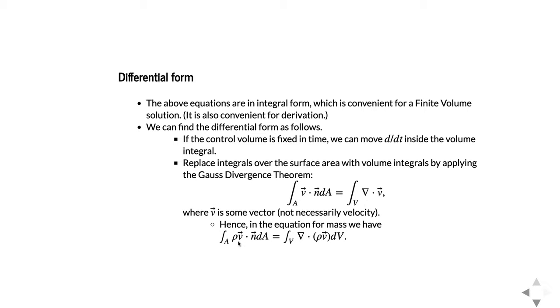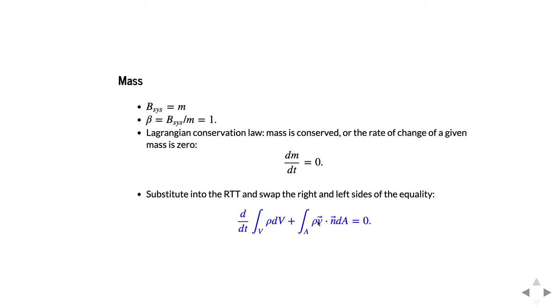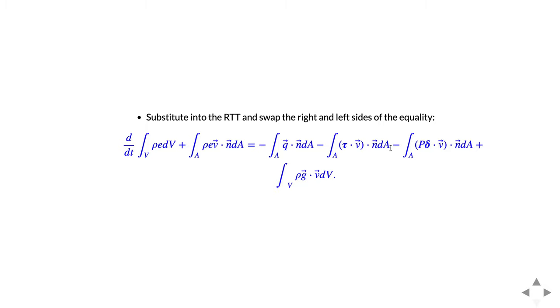In the mass equation, we had the integral of rho*V dot n dA over the area. We can replace that with del dot rho*V integrated over the volume. Then moving d/dt inside (since the volume isn't a function of time) and applying the Gauss divergence theorem, we combine the two volume integrals to get the integral over volume of d(rho)/dt plus del dot rho*V, times dV, equals zero. The same conversion applies to the energy equation — all area terms turn into volume integrals.